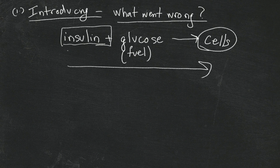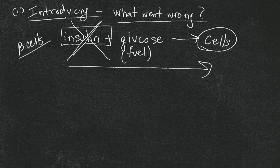What happens in diabetes is that, for some reason we're not quite sure about as yet, the body in people with type 1 diabetes perceives its insulin-producing cells — which are the beta cells — as foreign tissue. It attacks them and destroys them, a lot at first, and gradually over time finishes off the rest of what we had.